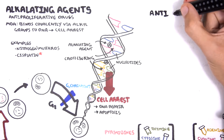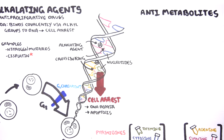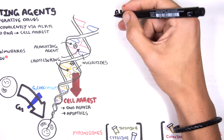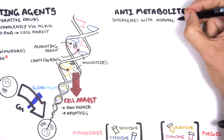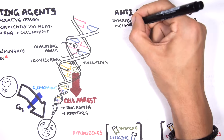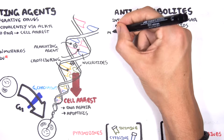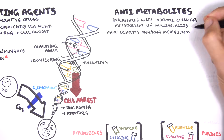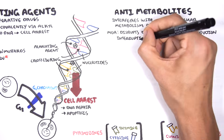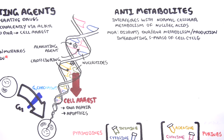The next class of chemotherapy agents are the anti-metabolites. These interfere with normal cell metabolism of nucleic acids, disrupting DNA and RNA metabolism and production, and interrupting the S phase of the cell cycle. Focusing on DNA metabolism, the four nucleotides for DNA are thymine, cytosine, adenine, and guanine, of which thymine is strictly DNA.